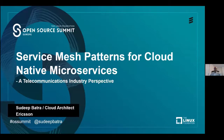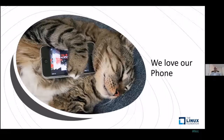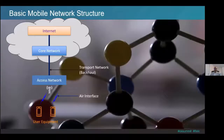We all love our phones, however a lot goes behind the scenes that enables us to talk, text, browse, and be connected for work or to our loved ones. Let's take a look at a high-level view of the basic telecommunication network. In this diagram we can see the user equipment — which is our handset — connecting to the access network over the air interface.